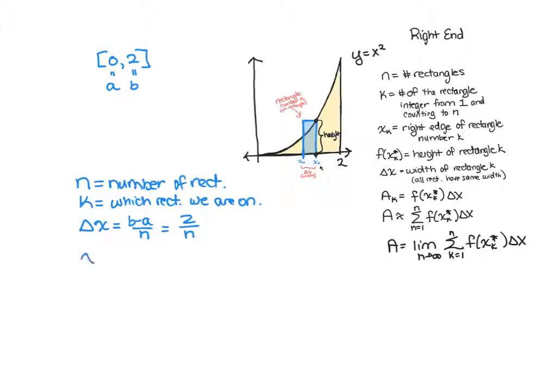Our x sub k is going to be a plus k times delta x. That was the formula that we came up with today in class. So our a is our left endpoint, so 0, plus k. We want to leave the k in there because we want a formula that will work for any rectangle we're thinking about. And then our delta x we found was 2 over n. So we're saying we start at 0 and we move over a width of 2 over n, k times, until we finally get to the right endpoint of the rectangle we're currently thinking about.